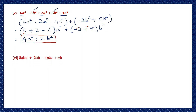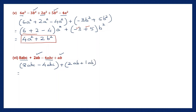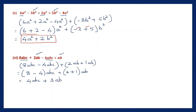Going on to the sixth one: here we have like terms abc and abc — put them together: 8abc minus 4abc. Then the other like terms ab and ab: 2ab plus 1ab. Writing only the numbers: 8 minus 4 abc, plus 2 plus 1 ab. 8 minus 4 is 4abc, and 2 plus 1 is 3ab. So the final answer is 4abc plus 3ab.